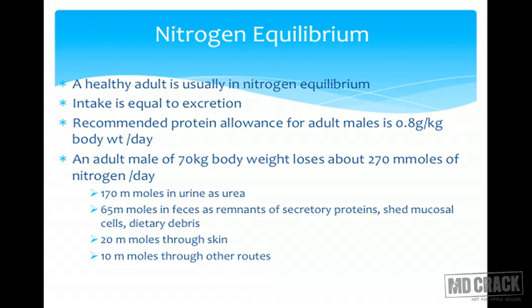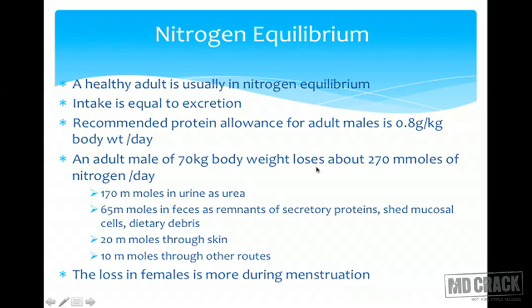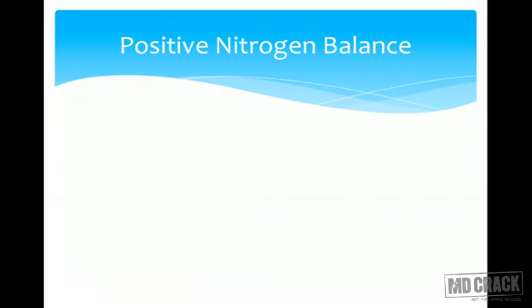All these losses must be replaced for the person to maintain nitrogen equilibrium, and this replacement comes only through protein intake. In females, losses are more during menstruation due to blood and protein loss, meaning protein requirement is going to be more during that time to maintain nitrogen equilibrium.